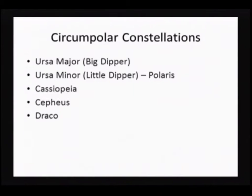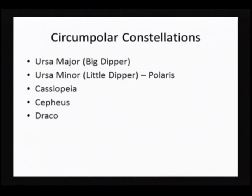So let's talk about the circumpolar constellations. They are Ursa Major and Ursa Minor — the Big Dipper and the Little Dipper are probably the ones you're more familiar with. Then we have Cassiopeia, Cephas, and Draco. Out of those five circumpolar constellations, there's really only one star I want you to be familiar with, and that's Polaris — that's in the Little Dipper.